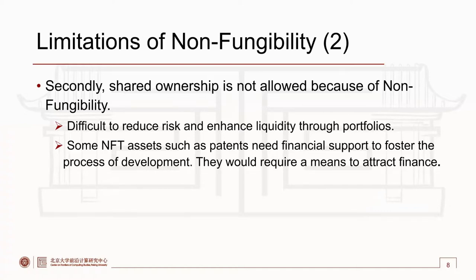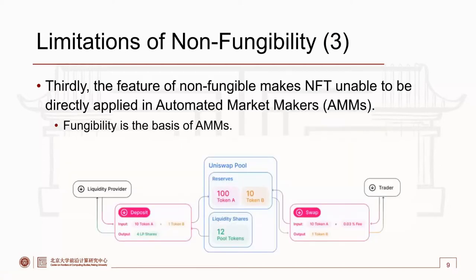Some NFT assets such as patents need financial support to foster the process of development and require a means to attract finance. These two limitations also exist in traditional settings. We want NFTs to be deeply involved in the current decentralized finance ecosystem such as automated market makers. However, the non-fungibility of NFTs makes them unable to be directly applied in automated market makers, because fungibility is the basis of current automated market makers such as Uniswap.